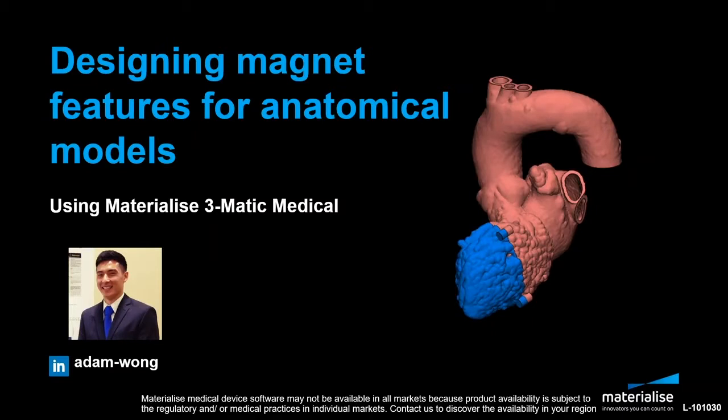Before we print a model like this, we recommend that you understand the limitations of your printer and material. For example, if you're working with a flexible material, we recommend that you print out a smaller sample size before printing an entire model, mainly because if you're working with magnets and gluing them into a magnet holder — as we'll show in this demonstration — you'll want to test the clearance you need as well as the glue you're working with, and that will save you time and money in the long run. With that, let's get into the demonstration.